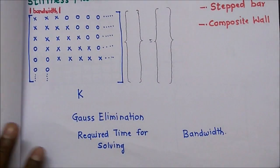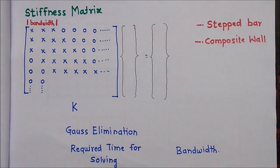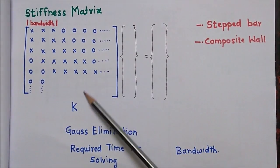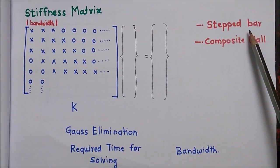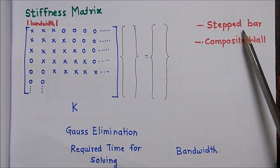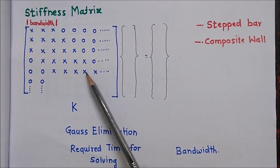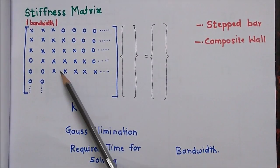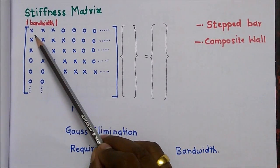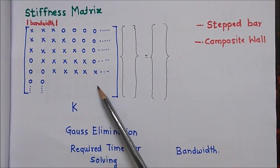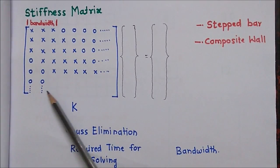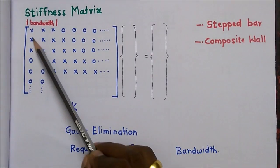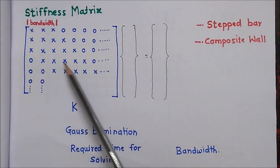We have a stiffness matrix here. We have solved examples of a stepped bar as well as a composite wall. What we do is form small stiffness matrices and combine them together to get this global stiffness matrix. The diagonal elements are non-zero, and the other elements are zero, especially in the lower corner — so this matrix has a band along the diagonal.